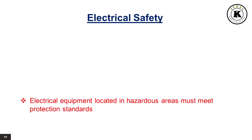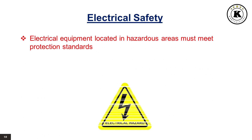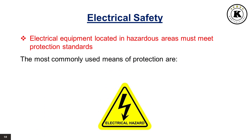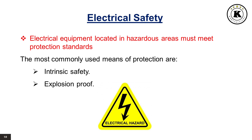Electrical safety: Electrical equipment located in hazardous areas must meet protection standards. The most commonly used means of protection are: Intrinsic Safety — a protection technique for safe operation of electrical equipment in hazardous areas by limiting the energy, electrical and thermal, available for ignition; and Explosion Proof — meaning the enclosure must be able to internally withstand any internal explosion and any sparks generated internally, preventing these sparks from igniting any vapors, gases, fibers, or dust in the surrounding environment.